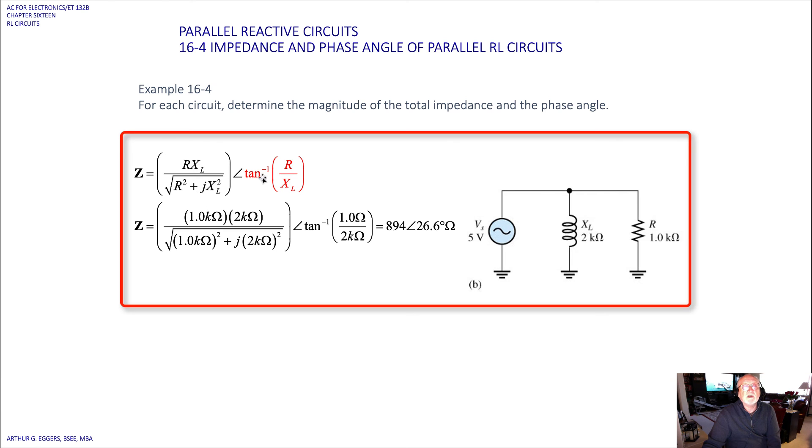Product over the sum, inverse tangent, 1k ohm, 2k ohms for our values. Pythagorean theorem in the denominator, inverse tangent, 1 ohm over 2k ohms. We end up with 894 at an angle of 26.4 degrees in ohms.